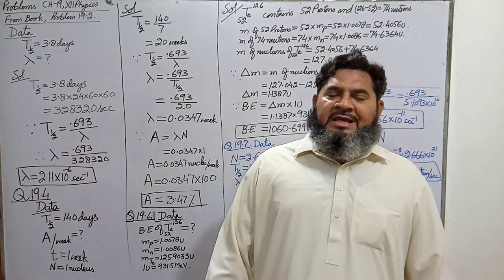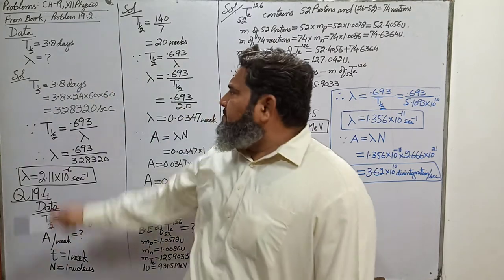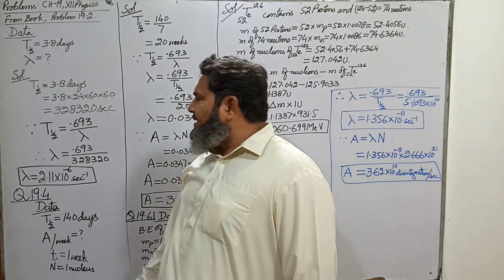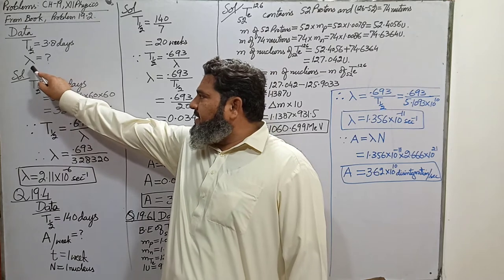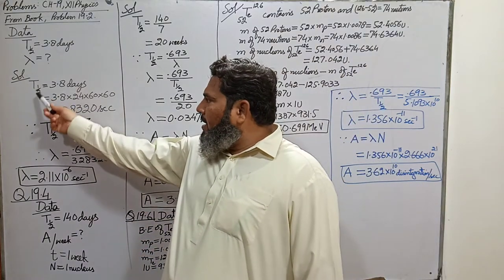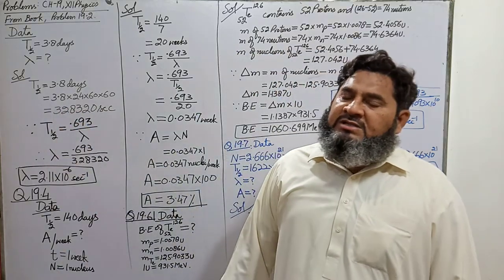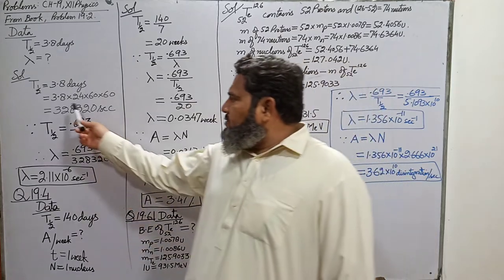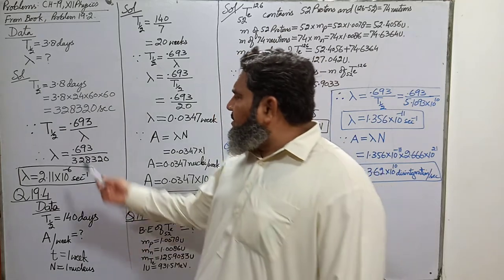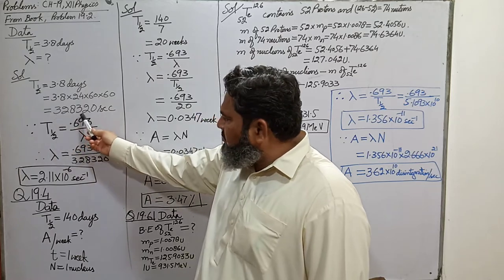Now we move to problems in chapter 19. Problem 19.2: the half-life of radon is given as 3.8 days. We have to calculate its decay constant lambda. The half-life is given in days, which we must convert to seconds because lambda's unit is per second. So 3.8 days × 24 hours × 60 minutes × 60 seconds = 328,320 seconds.